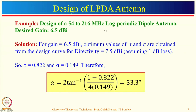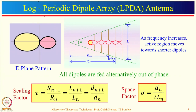Let's take a design example of a log periodic dipole antenna array from 54 MHz to 216 MHz, with a desired gain of 6.5 dBi. For gain = 6.5 dBi, we choose optimum tau and sigma for directivity = 7.5 dBi (assuming 1 dB loss). From the design curve, tau ≈ 0.822 and sigma ≈ 0.149. We can also calculate the array angle alpha from these values.